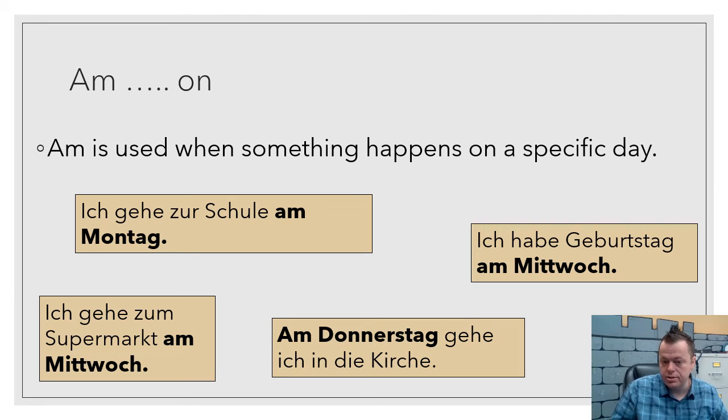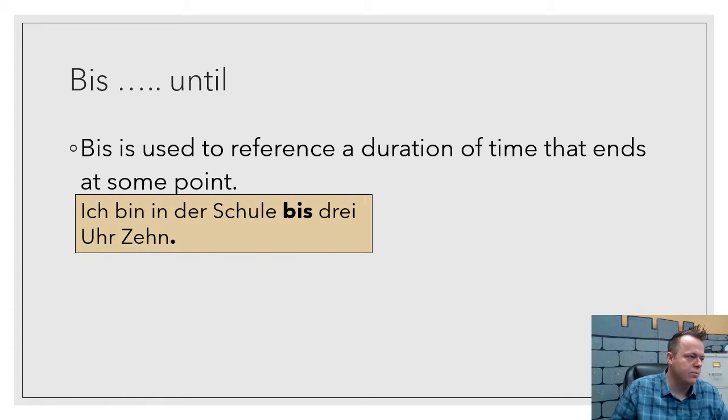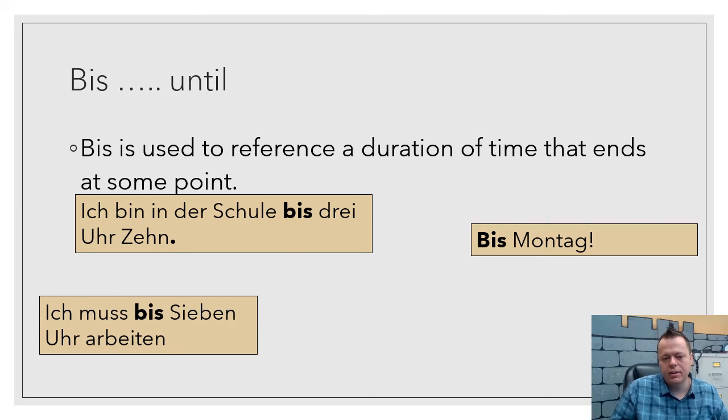Am Donnerstag gehe ich in die Kirche. That one's a little different because it started with the time reference first. So we're going to see in a minute here where we go. So bis is used to reference a duration of time and it ends at some point. Ich bin in der Schule bis drei Uhr zehn. Or you could say bis Montag, until Monday. You could also say ich muss bis sieben Uhr arbeiten.